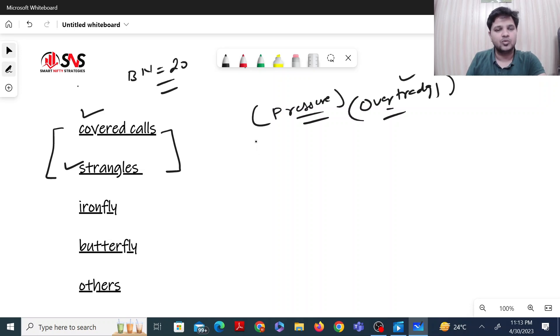With covered calls, I was getting returns of about 15,000 to approximately 25,000 depending upon the market and the month, which gave me around 25% returns.